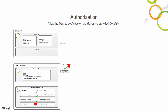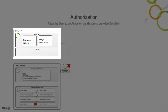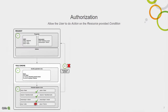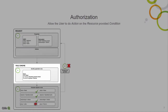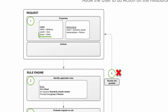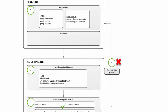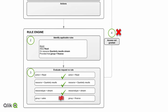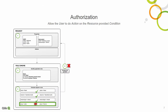Upon logging in, the rules engine reviews the user and their attributes, and creates an access request. The access request is evaluated against the rules in the rules engine and determines if the user has access to a resource. In the example, a user who is a member of the sales group is requesting access to the quarterly results stream. According to the rule, only users who are members of the finance group are allowed to access the quarterly results stream. Consequently, the user does not gain access to the stream because the group attribute does not match.